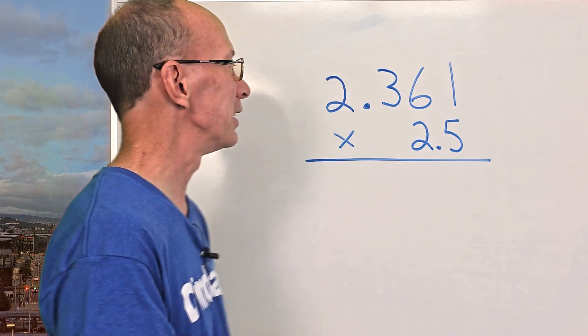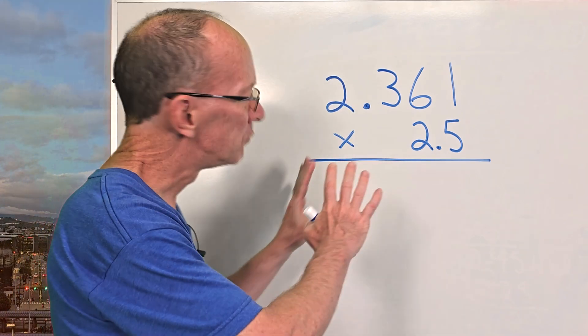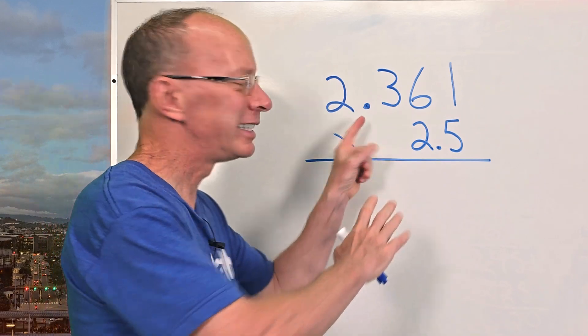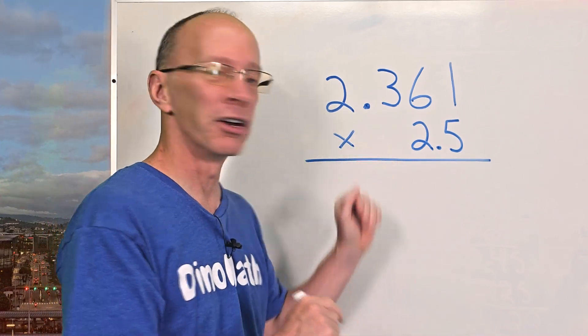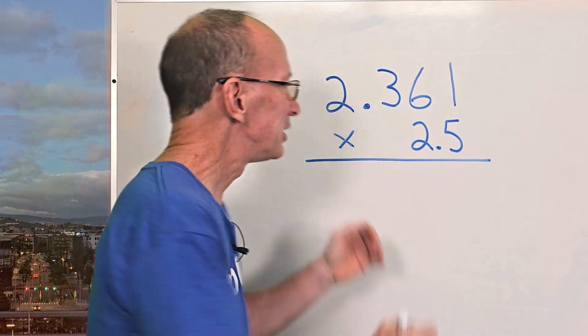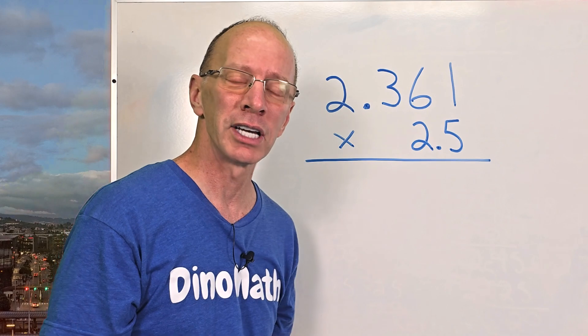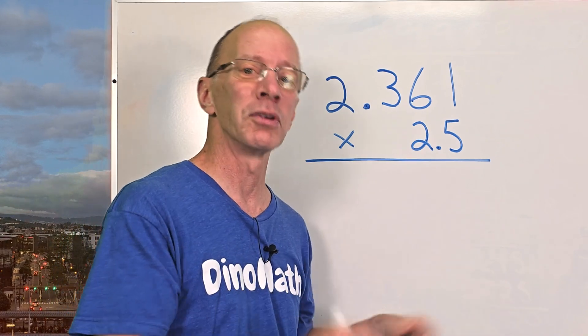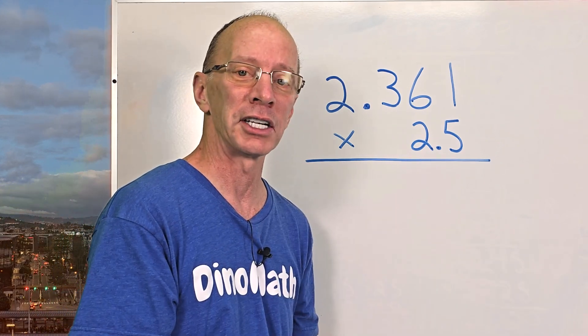All right, you ready to get started? Let's do it. So don't worry about the decimals. Just pretend they're not there. Maybe you can't cover them up because then you can't see where you're going. But just ignore the decimals and we're going to take a look at those decimals after we do the multiplication.